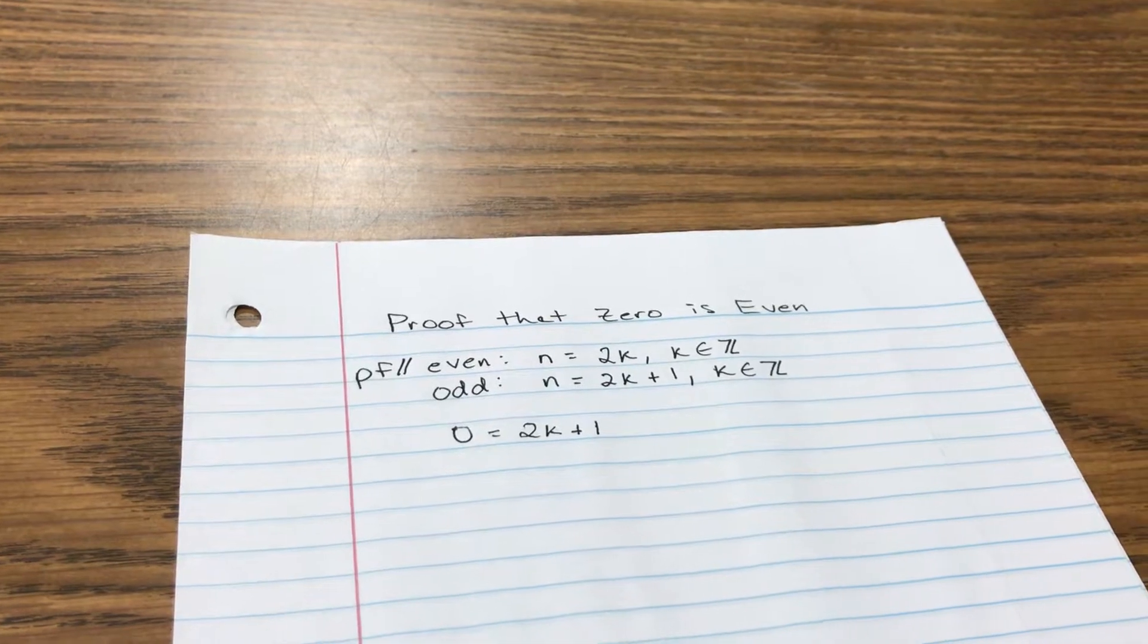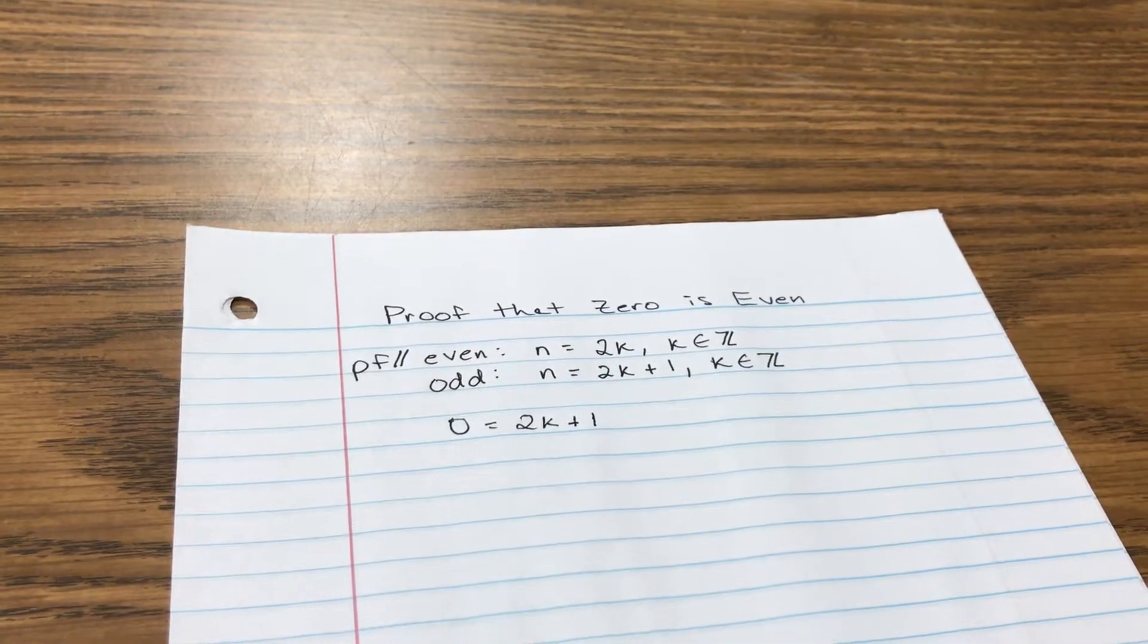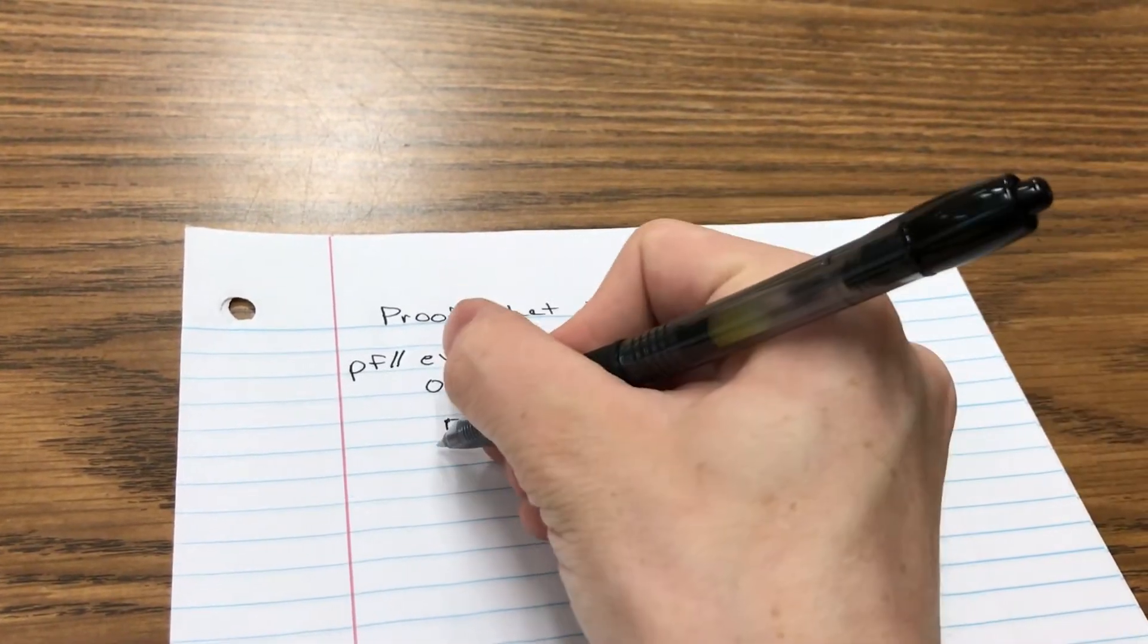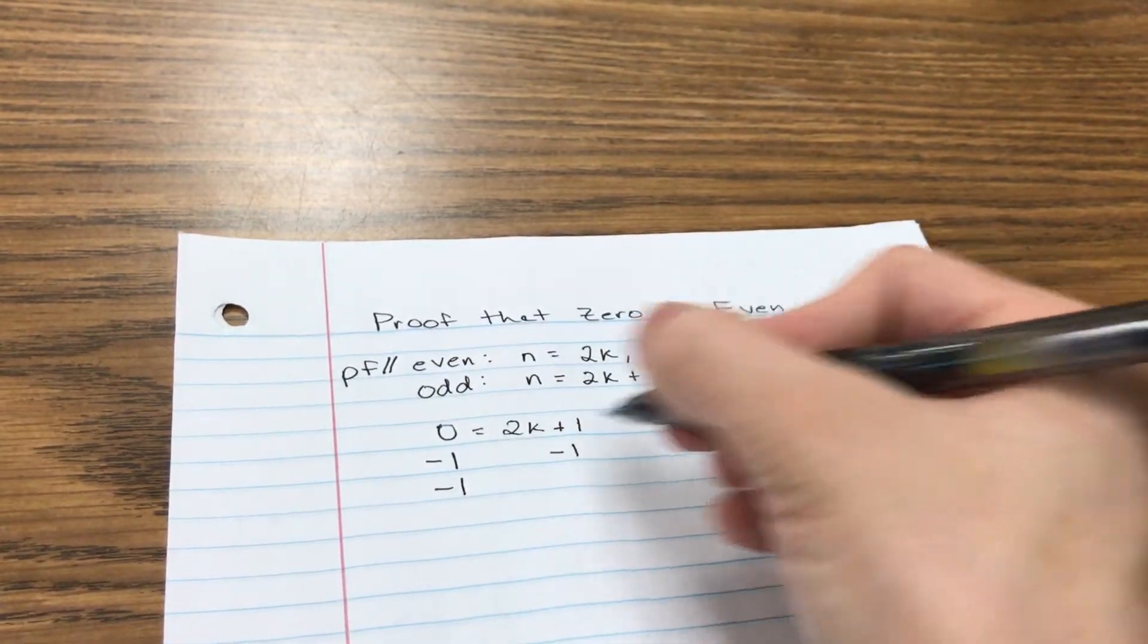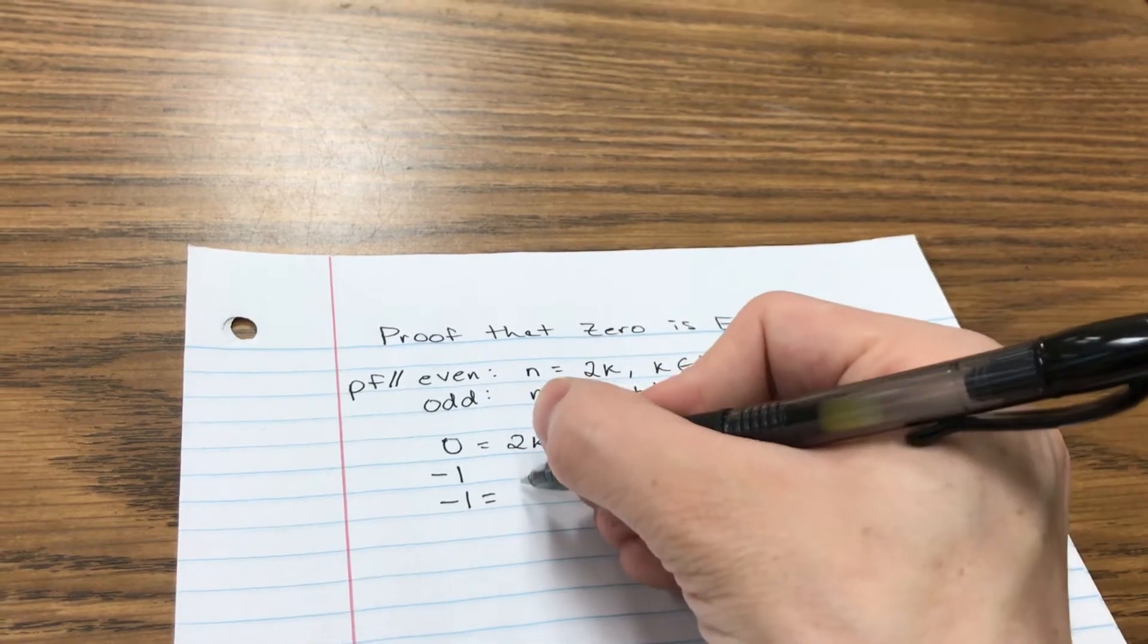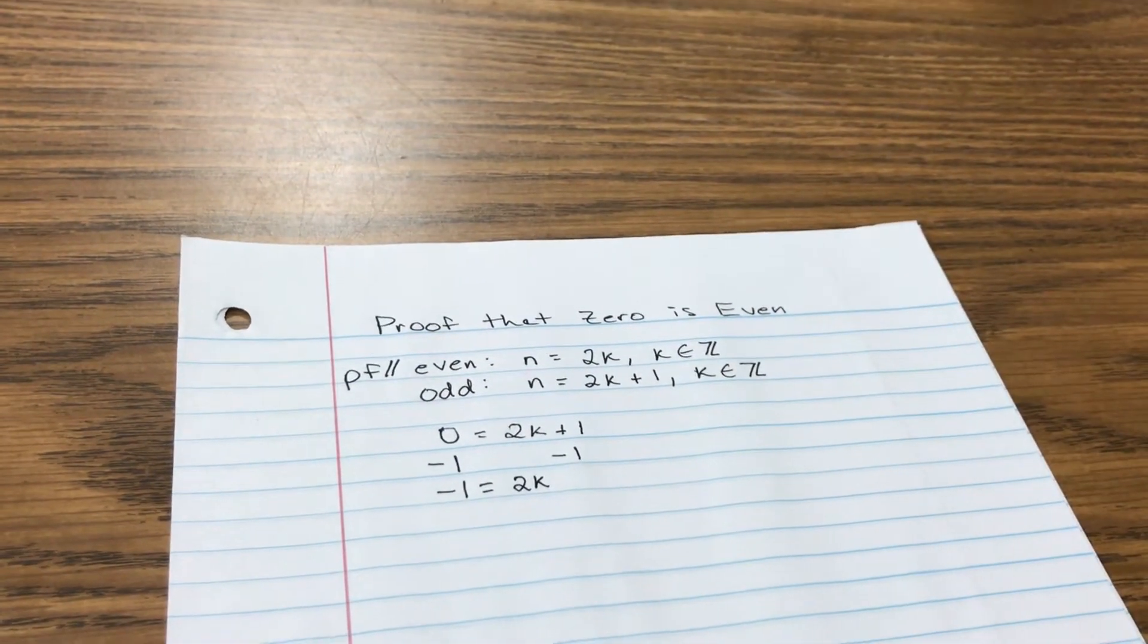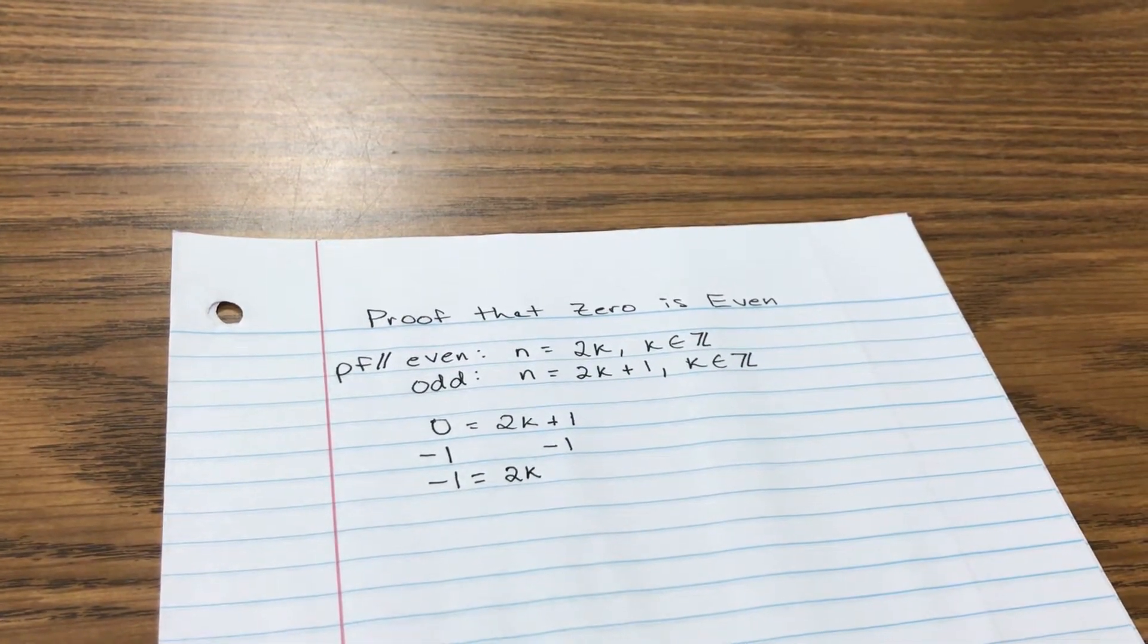So what I'm going to do is subtract 1 from both sides just so I can get rid of that plus 1. So watch this: as I take away 1 from both sides, I'm left with negative 1 on the left side, and since these ones disappear, I'm just going to be left with 2k. That's it. So now I've got 2k is equal to negative 1.